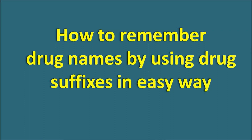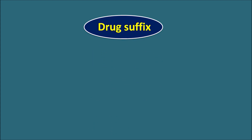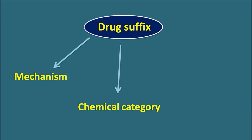Hi everyone. Today in this video we are going to discuss how to remember drug names by using drug suffixes in an easy way. Drug suffixes can give you information like they can indicate the mechanism of action of the drug, the chemical category, and even the clinical category. So when we remember the drug suffixes we can easily remember the drugs, their chemical categories, and sometimes their mechanism of action.